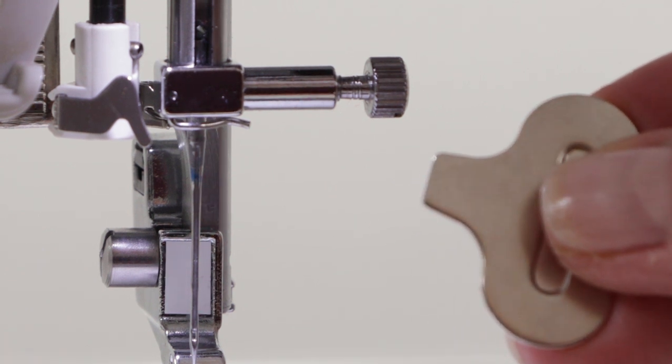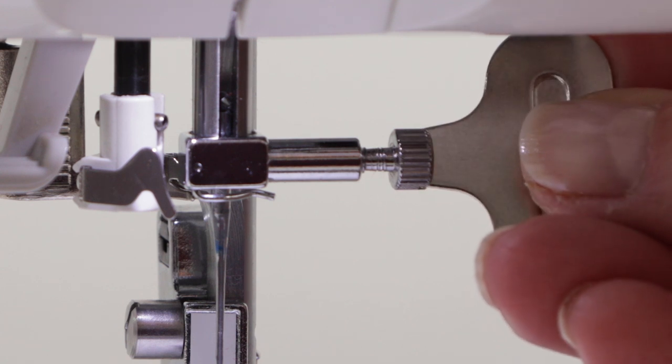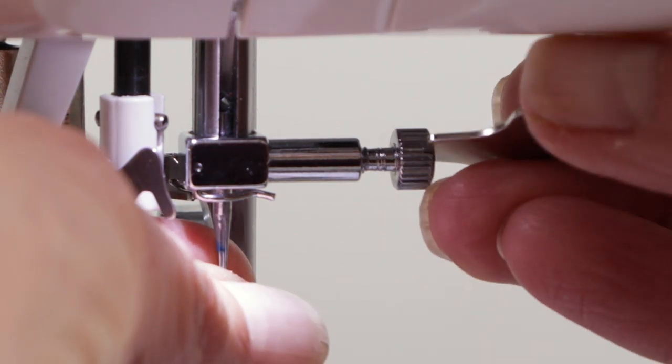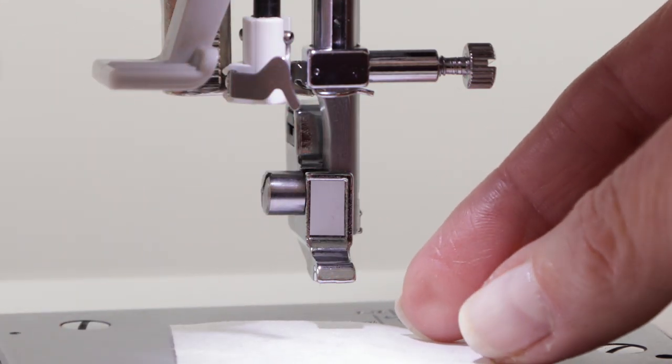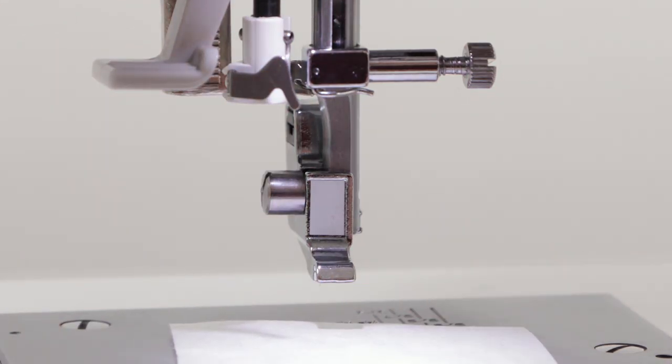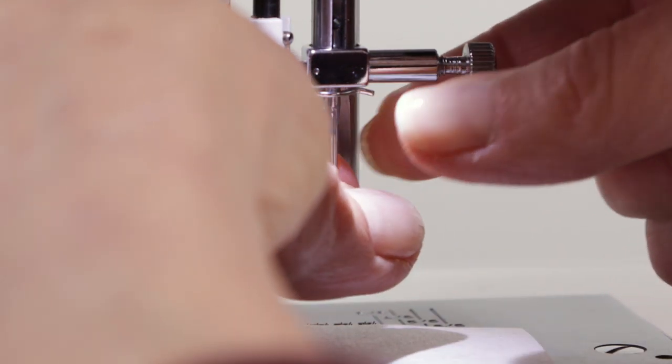Place the screwdriver into the needle clamp screw here at the side and turn toward you to loosen so the needle will drop out. Then replace your new needle by pushing it in to the needle clamp and tightening the needle clamp screw.